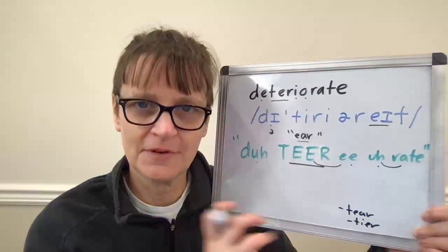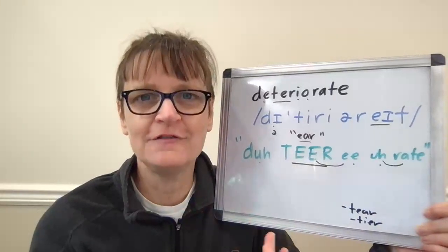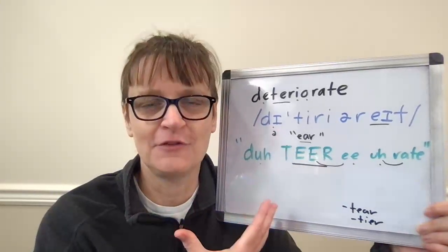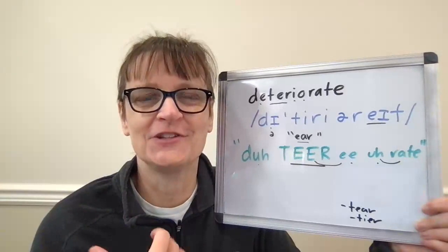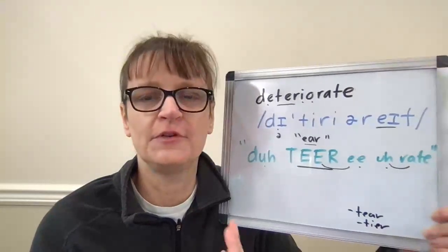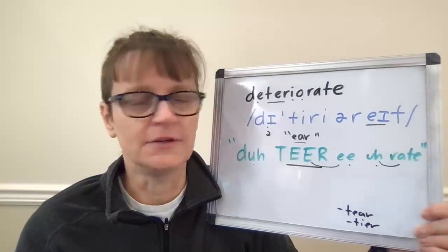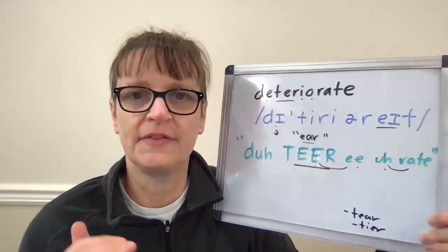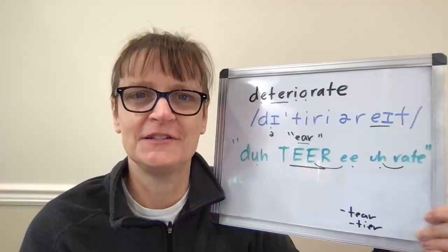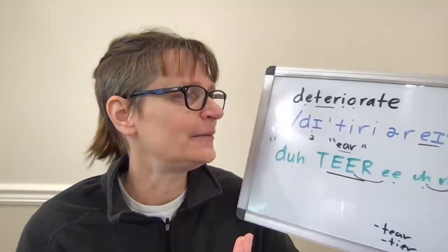Approach it and figure out where it's breaking down for you. Take it nice and slow and then speed it up. Once you have 'deteriorate' by itself, do try practicing it in short phrases, because even though you master the word by itself, using it in everyday speech can still give you challenges. For example: 'We've really seen society deteriorate in the last few years,' or 'I hope that the material doesn't deteriorate over time.' From those examples you might be able to tell that deteriorate means break down, become decrepit, become no longer functional, etc.